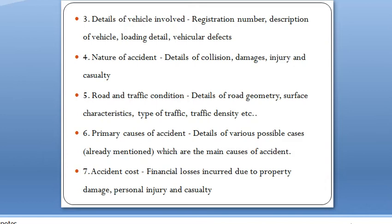Fifth is road and traffic conditions - it includes details of road geometry, surface characteristics, type of traffic during the accident, and traffic density. Sixth is the primary cause of accident - these are the details of various possible causes which are the main cause of accident, as already mentioned in the last class.